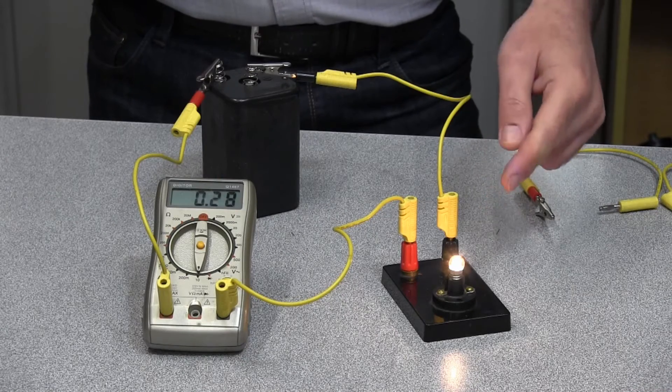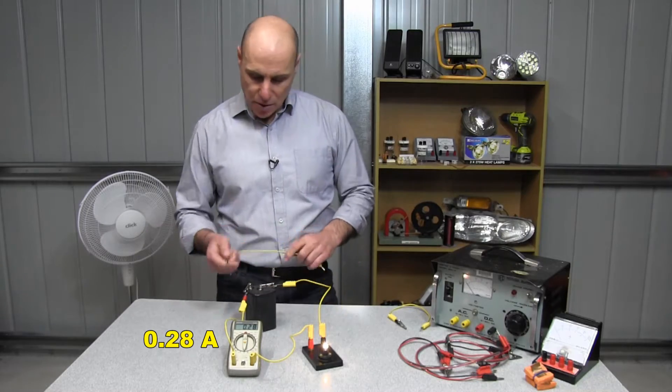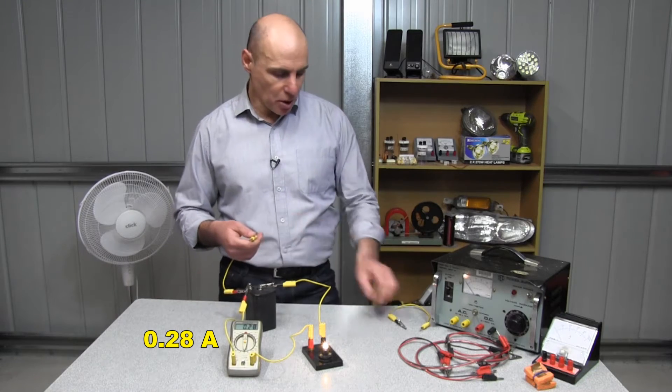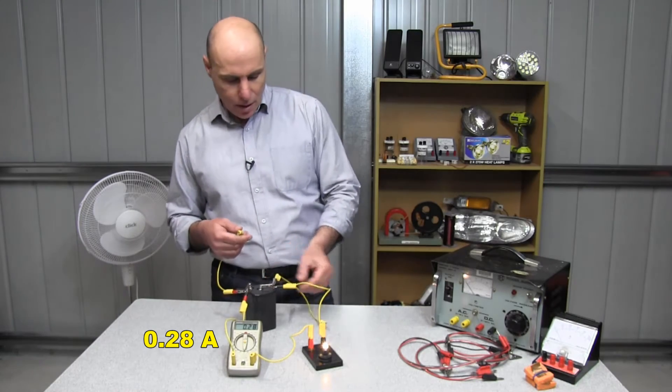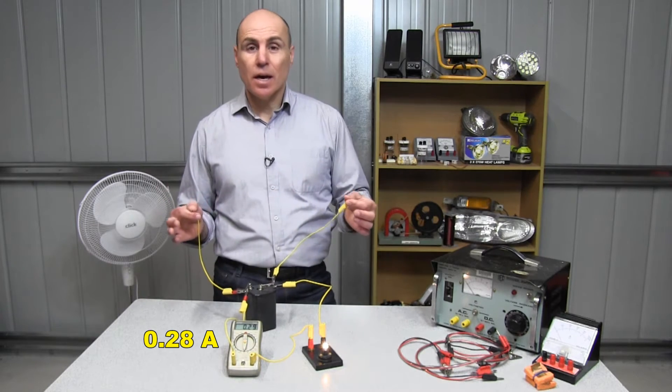This little light globe is drawing a current of 0.28 amps. If the same amount of current was flowing through my body right now, say from one hand to the other across my chest, it would kill me.